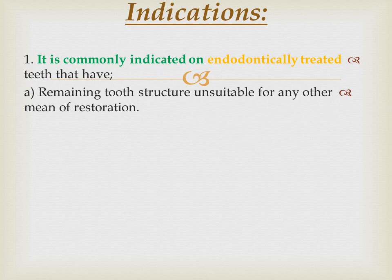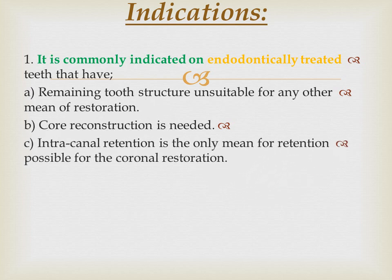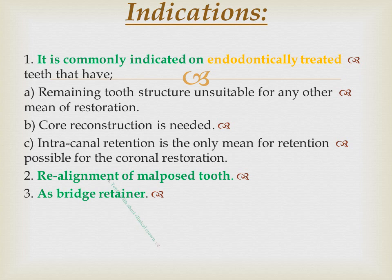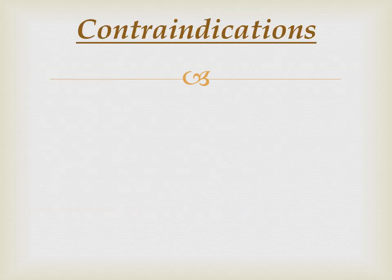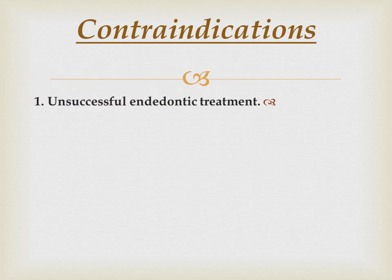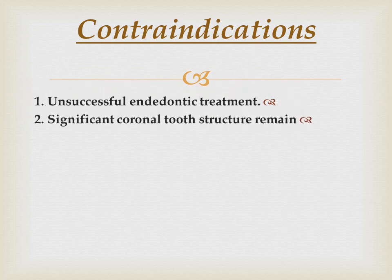The main indication of post crown is on endodontically treated teeth where the remaining tooth structure is unsuitable for any other means of restoration, the core structure reconstruction is needed, and intra-canal retention is the only means of retention. Other indications include alignment of a malposed tooth, use as a bridge retainer, and teeth with short clinical crowns.